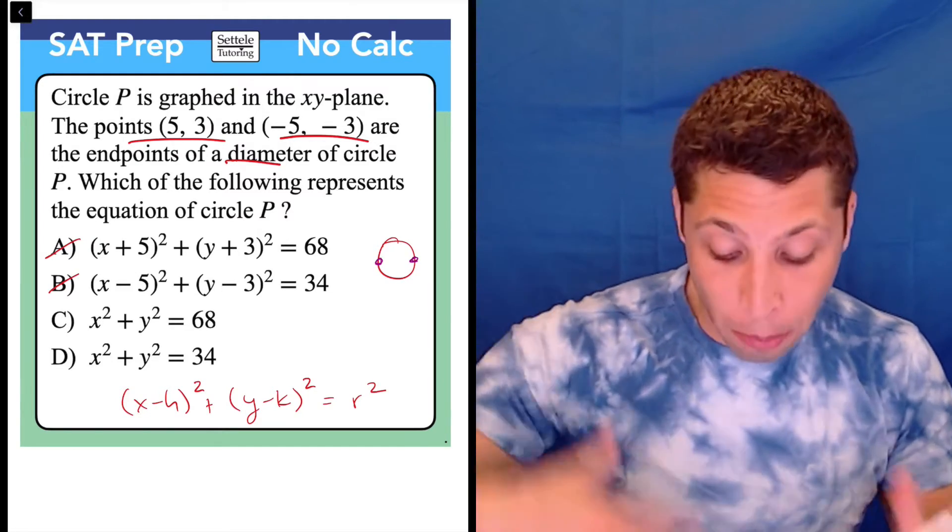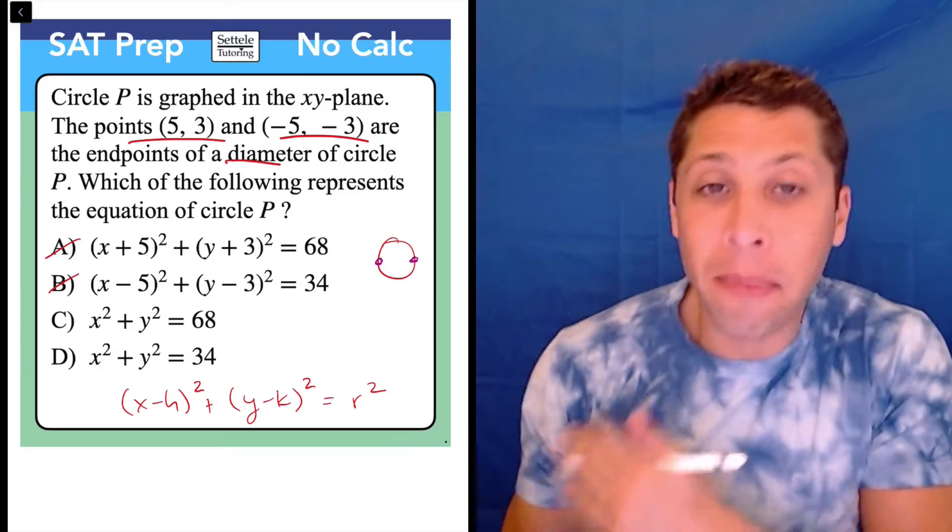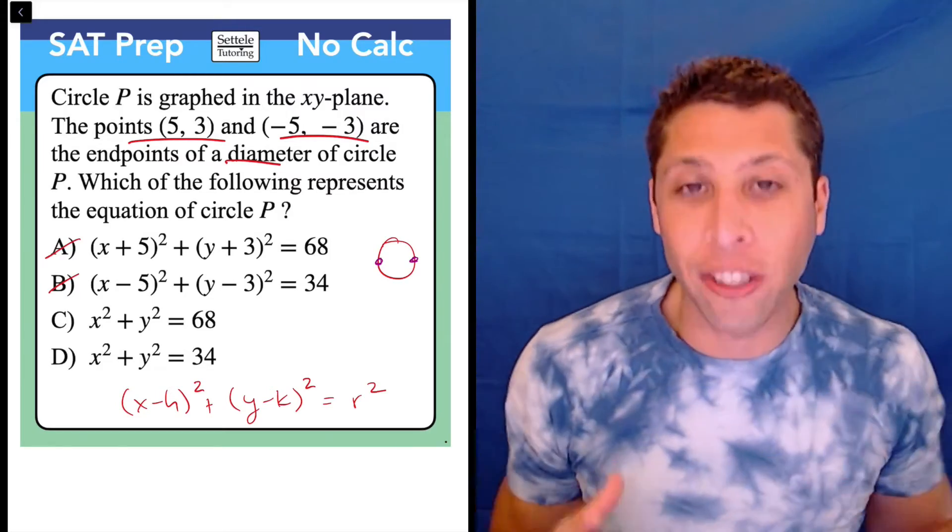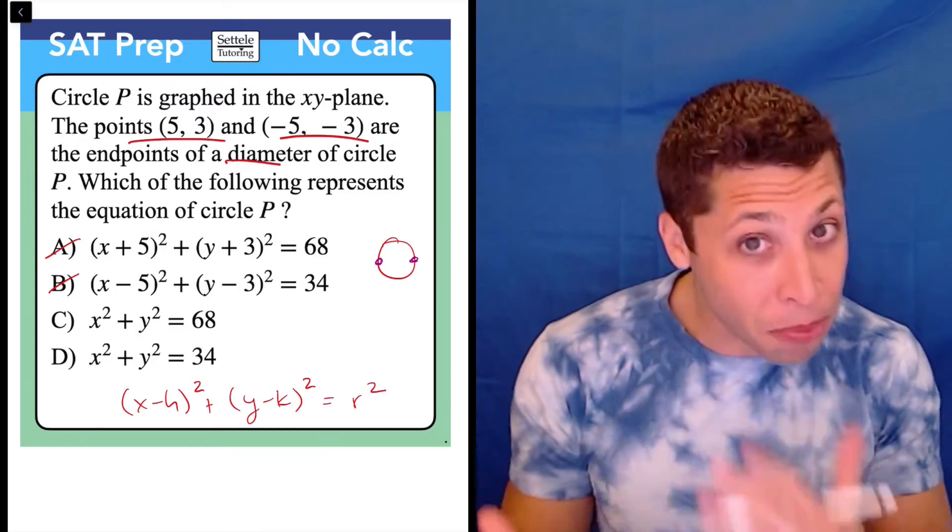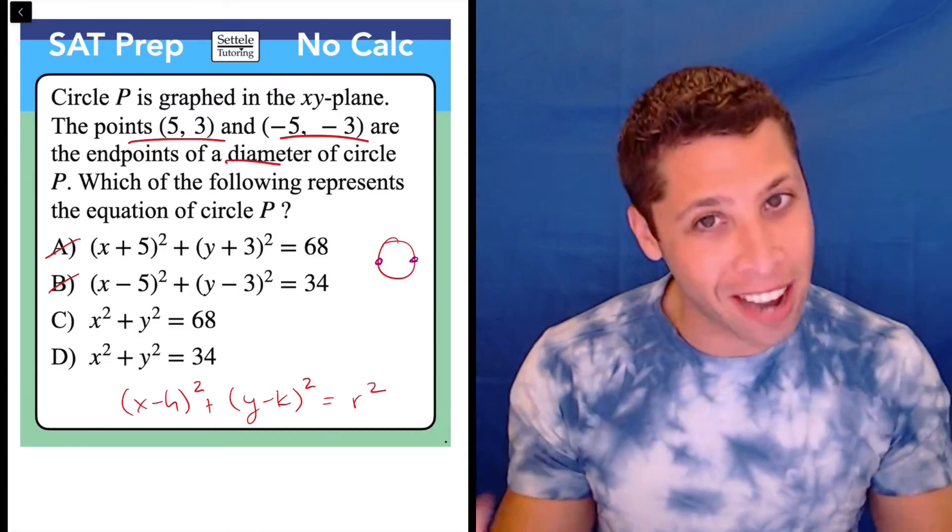The reason that's important is that both choices A and B make it seem like those points are the center. They're kind of plugging them in in the h and k spots, but that's not what they're saying. They're just not giving us the center. We sometimes get that and then we can plug it in, but that's not what's happening here.